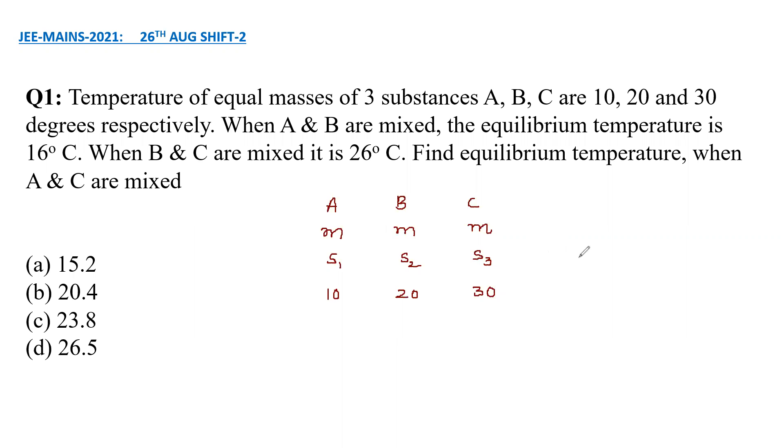The three combinations they have considered are A, B and B, C and A, C. For A, B and B, C they have given us the final temperature. They are asking the final temperature when A and C are mixed.